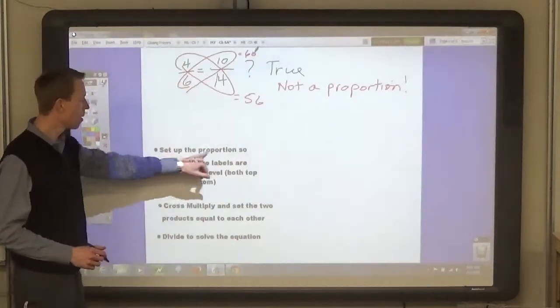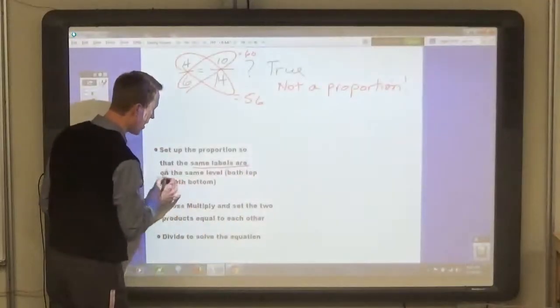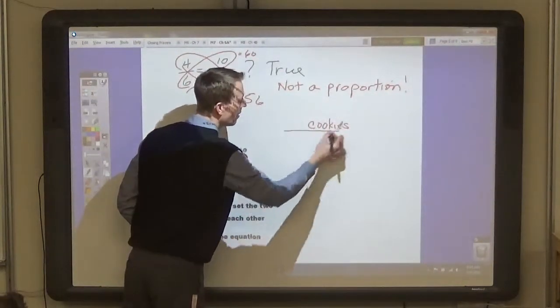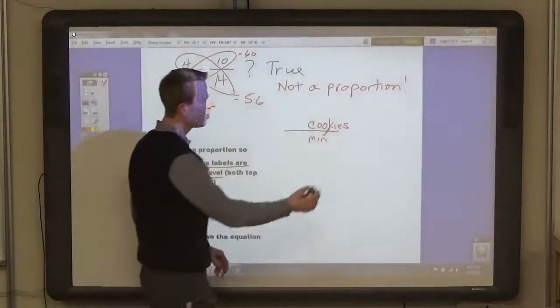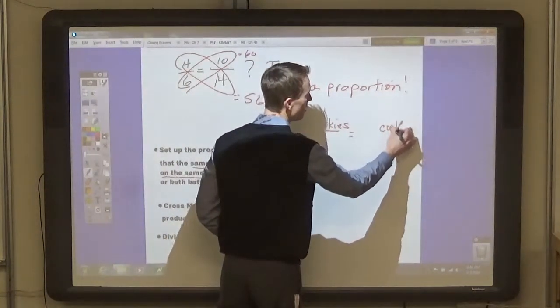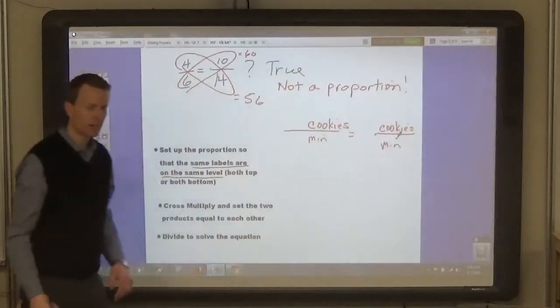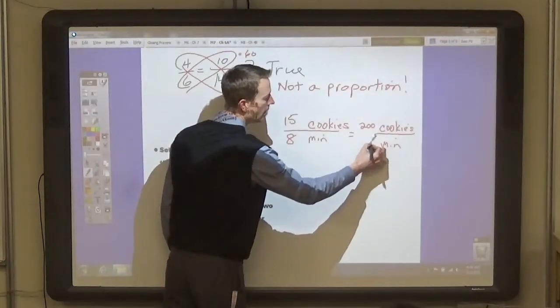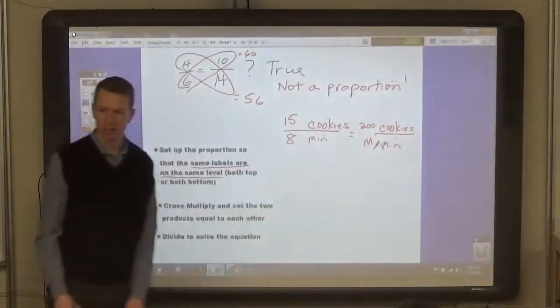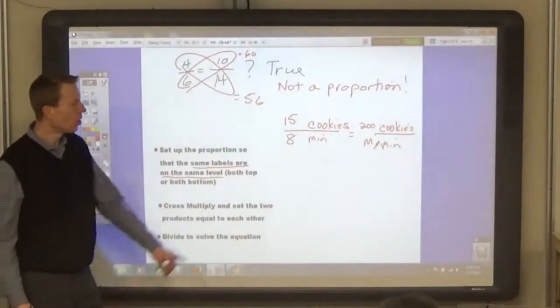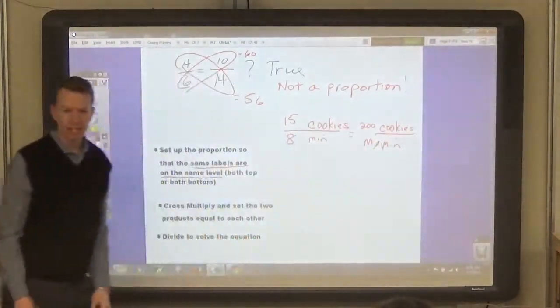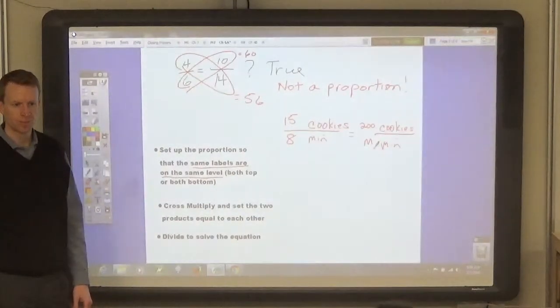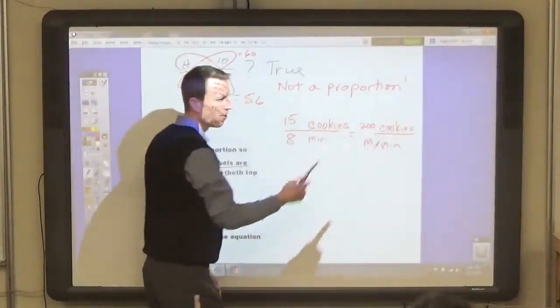So the key is to set up the proportion so that the same labels are on the same levels. In other words, when we had cookies, we were talking about cookies in so many minutes. Then, on the other side, we also put cookies over minutes. We had 15 cookies in 8 minutes equal to 200 cookies in M minutes. That was what we were looking for. So the labels, then, were on the same level. That's the key to setting up a proportion, is to put the same labels across from each other. Once you have that, then you can multiply and solve it very easily.